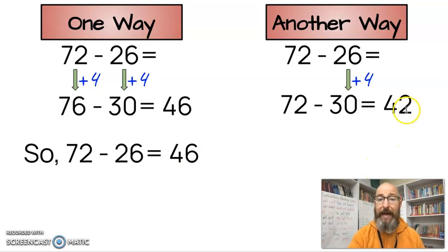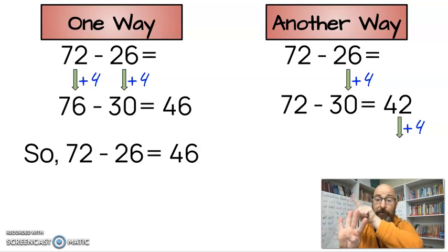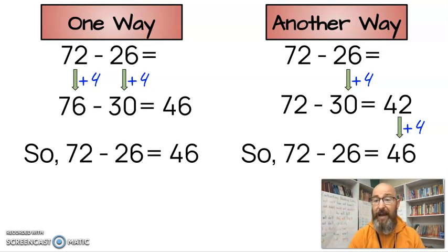Now again, at this point in time, we have different answers because we have not added our second four. So we're going to add our second four on this one to the difference. We're going to add it to the answer. And if I add four to 42, and we know that we can add up 43, 44, 45, 46. Now we have the same answer. 72 minus 26 equals 46. So that's how you use addition for compensation. You can add it to the minuend and the subtrahend at the very beginning, or you can add it to the subtrahend and the difference. Both ways work. Both ways are correct. You just need to find a way that works best for you.